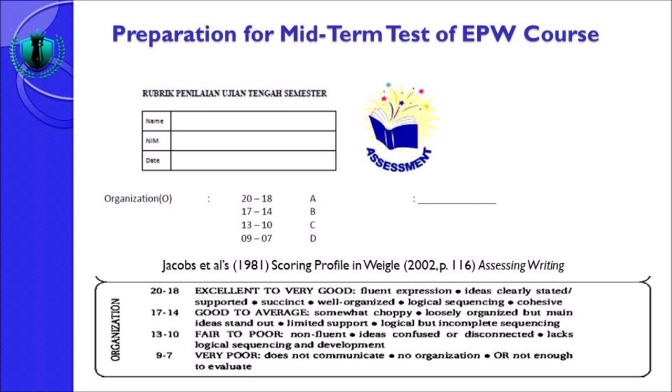Nilai good to average: somewhat choppy — kalimat-kalimat yang digunakan pendek-pendek seperti 'I go to the zoo, I like the animals, I enjoy the view, I saw giraffe, and we saw lion.' Loosely organized but main ideas stand out — tulisan tidak begitu rapi atau jumping tapi sinkron dengan topic. Limited support — kurang didukung dengan data. Logical but incomplete sequencing — tulisannya logis tapi tidak beraturan.